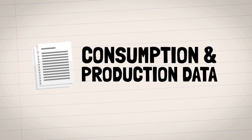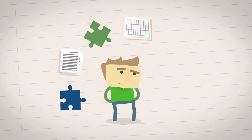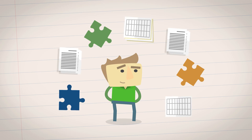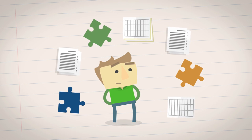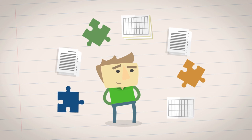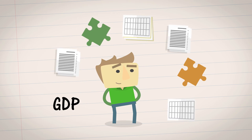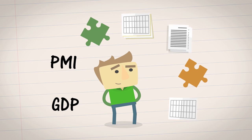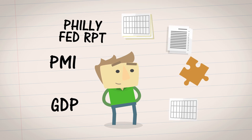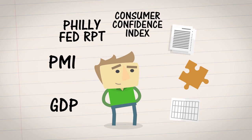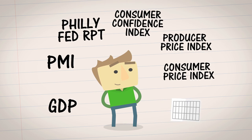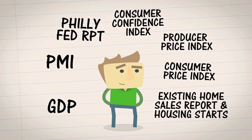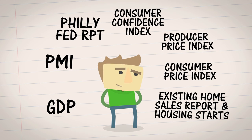Finally, there's consumption and production data. There are various reports that measure different aspects of consumption and production, so it's up to the savvy investor to piece it all together. Some examples include the Gross Domestic Product, or GDP, Purchasing Managers Index, or PMI, Philly Fed Report, Consumer Confidence Index, Producer Price Index, Consumer Price Index, and the Existing Home Sales Report and Housing Starts.